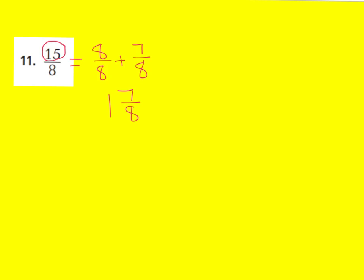Let's look at number 11. Boys and girls, I'm going to let you try number 11 on your own. Remember, turn it into a sum of fractions by pulling out the wholes. Your goal is to get to 15 eighths. Go ahead and try this on your own, and press play whenever you're ready to go over the answer together. Here's what I have — check your work with me. A whole is 8 eighths. I pulled out 8 eighths, but adding another 8 eighths would give me 16 eighths, which is too much. So I added 7 eighths. That's 1 whole and 7 eighths — our mixed number.